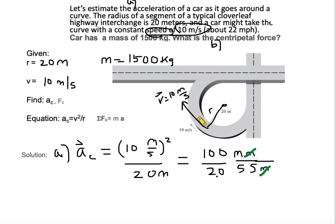So now we have 100 divided by 20. That is 5. And now we have a meter on the top, and then we have seconds times seconds on the bottom. And I'm just going to put it as second squared.